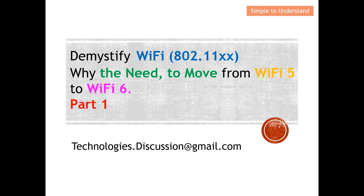When the network becomes congested, Wi-Fi 5 probably cannot serve us as well. So basically in this video I'm going to explain the motivation — why we need to move from Wi-Fi 5 to Wi-Fi 6. The key reason Wi-Fi 6 is mainly used is to combat the issue when the network becomes congested. This will be the objective: I'm going to explain how Wi-Fi 6 actually resolved the issue of a congested network. This is part 1 of a series discussion on Wi-Fi.